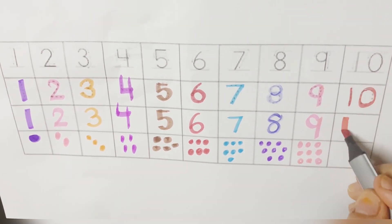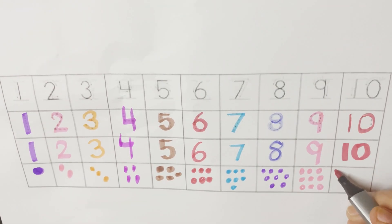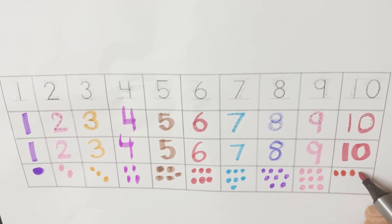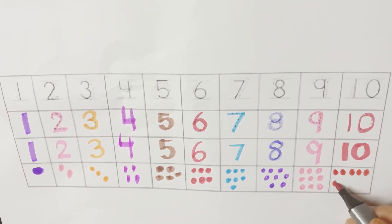Ten. Ten. So let's draw ten dots here. One, two, three, four, five, six, seven, eight, nine, ten. Wow!